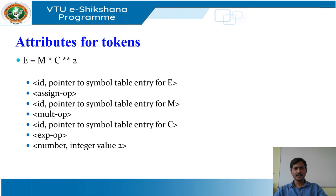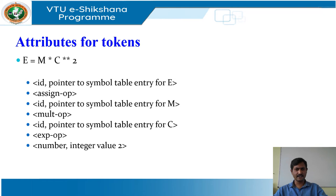The token names and associated attribute values for the statement E equals MC squared is written as a sequence of pairs. In certain pairs, especially for operators, punctuation, and keywords, there is no need for an attribute value. In this example, the token number has been given an integer-valued attribute. In practice, a typical compiler would instead store a character string representing the constant and use as an attribute value a pointer to that string.